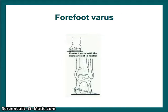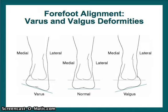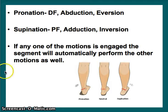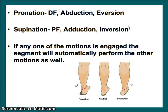Just a couple more pictures. If you're struggling with rear foot, hind foot, varus, and valgus, there are some good pictures of what you would see in subtalar neutral. Inversion motion should be two-thirds of the total hind foot motion; eversion should be one-third. This is a reminder that pronation is actually a combination of three movements of the ankle and foot: dorsiflexion, abduction, and eversion. Supination is a combination of plantarflexion, adduction, and inversion. If any of these motions is engaged, the segment will automatically perform the other motions as well — so if you go into dorsiflexion and abduction, you also will go into eversion.